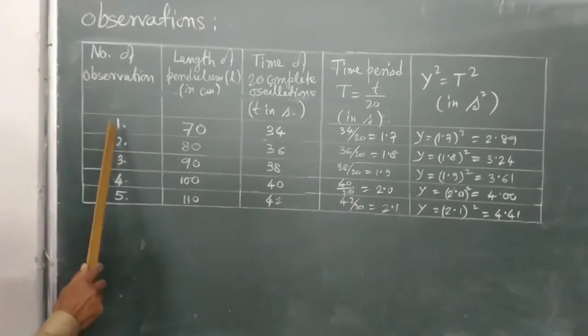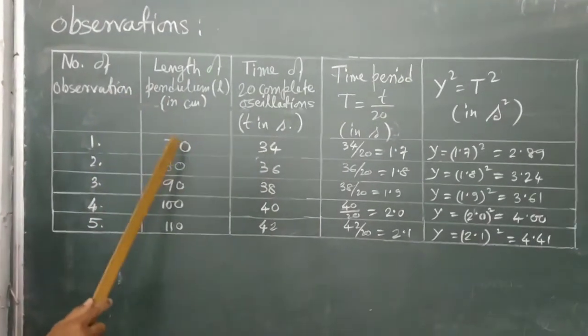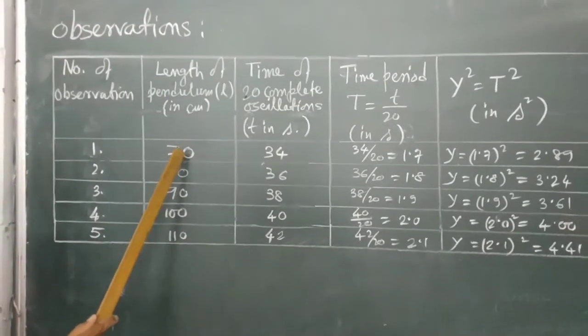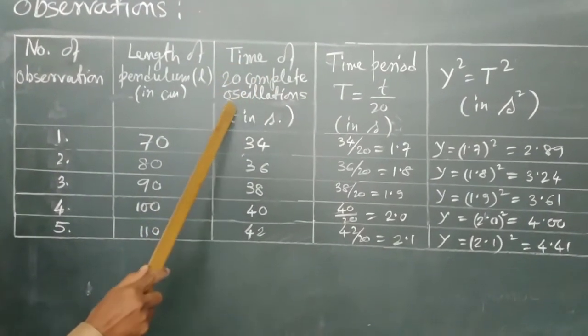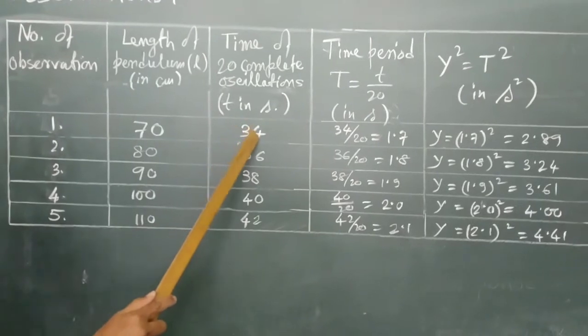For the first observation, as I told you before, we have taken effective length 70 cm. And that time the duration of time for 20 complete oscillations was 34 seconds.